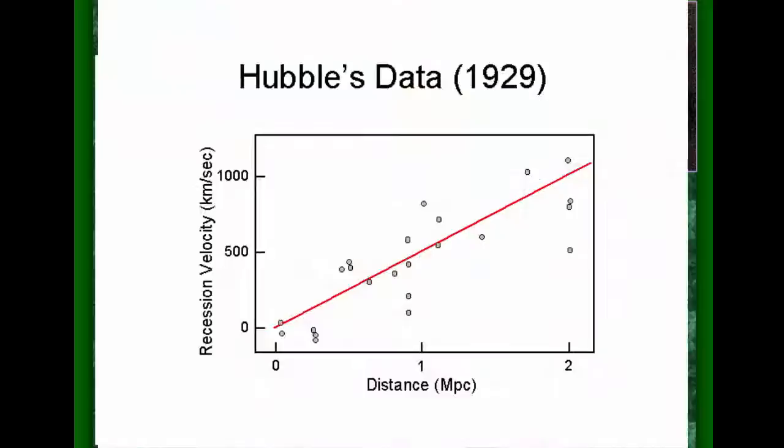This is a graph of distance on the x-axis. The silly MPC is mega parsecs. You can easily translate mega parsecs into light years. I won't go into what a mega parsec is, it's not important. You could easily plot light years down there, and I've seen these kinds of graphs plotted with light years. And then those distances were determined from Cepheids and apparent brightness.